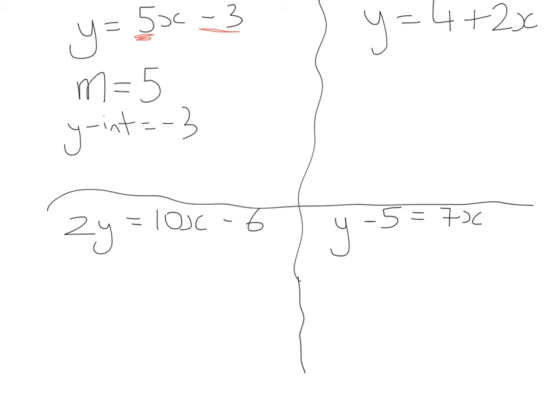Moving on to the second example we need to be really careful with this one because remember the slope is always the number in front of the x so it's just the opposite way around in this example so therefore m or the slope is equals to 2. The number that's by itself then is the y-intercept so therefore the y-intercept is equals to 4.